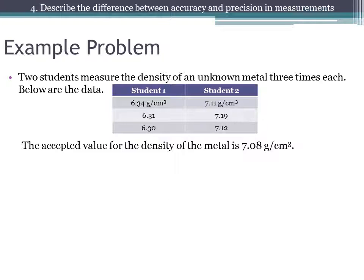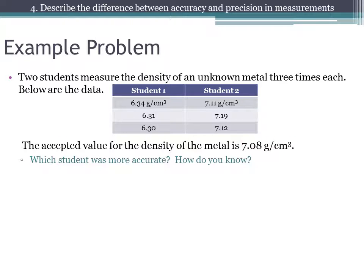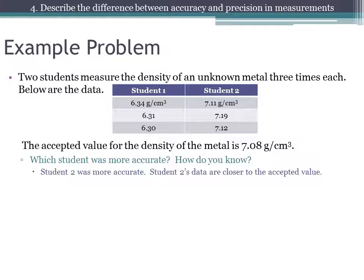Here is an example to consider. We have two students that measure the density of an unknown metal three times each, and we can see their data below. We are told the accepted value for the density of the metal is 7.081 grams per centimeter cubed. First question: which student was more accurate? Accuracy is how close we are to the right answer, and student two's data are very close to the accepted answer, while student one's are not. So student two was more accurate because student two's data are closer to the accepted value.